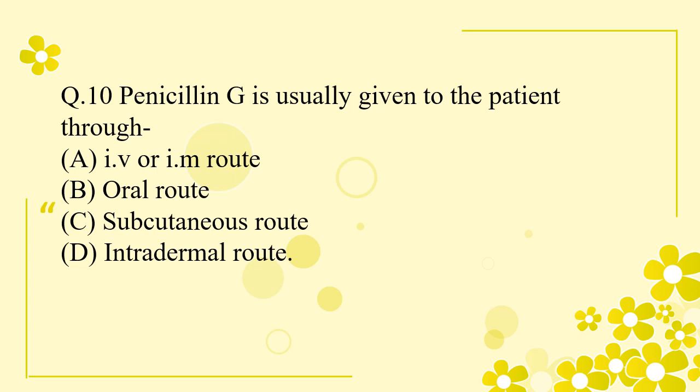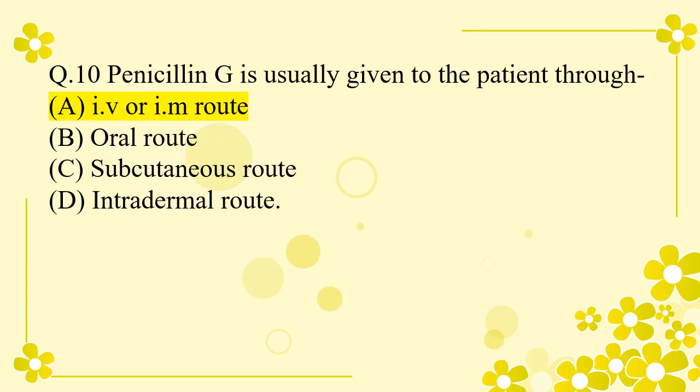Question 10: Penicillin G is usually given to the patient through — Option A: IV or intramuscular route. Option B: oral route. Option C: subcutaneous route. Option D: intradermal route. The right answer is intravenous or intramuscular route.